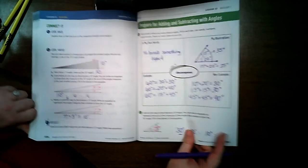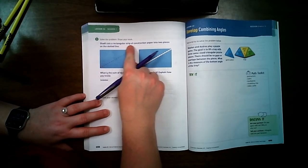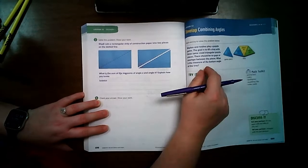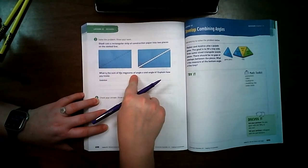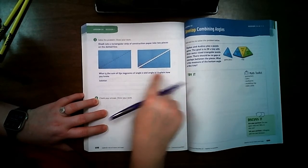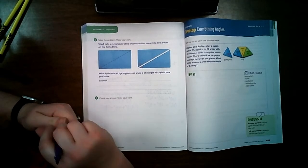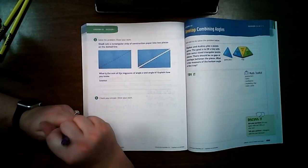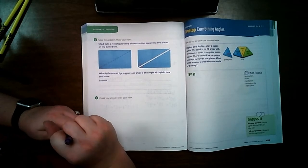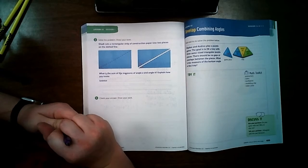Let's turn to page 698. Shady cuts a rectangular strip of construction paper into two pieces on the dotted line. What is the sum of the measures of angle A and angle B? Explain how you know. I'm going to give you just a minute to try to solve this one on your own. It's very similar to the first problem that we did in this video. So pause this and try this on your own. And after you're done, press play and see if you got your answer correct.